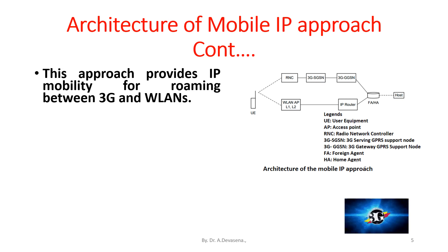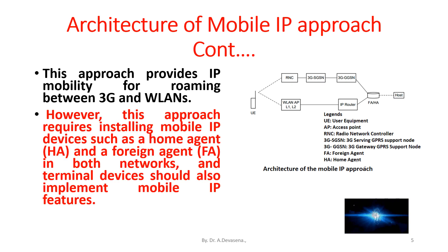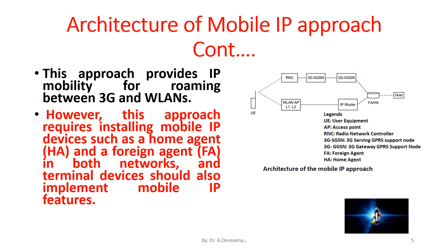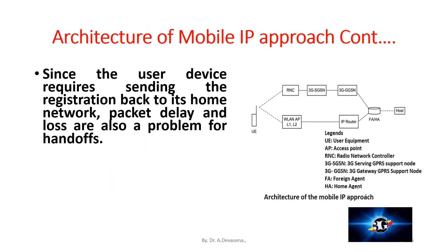This mobile IP approach provides mobility for roaming between 3G and WLANs. However, this approach requires installing mobile IP devices such as a home agent and a foreign agent in both networks, between 3G and WLANs. Terminal devices should also implement mobile IP features. Since the user device requires sending the registration back to its home network, packet delay and loss are also a problem for handoffs.